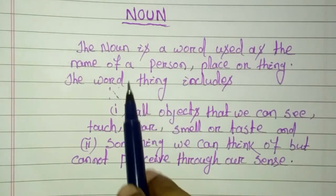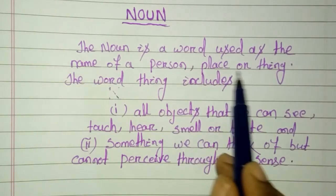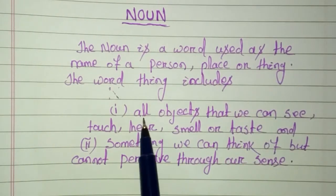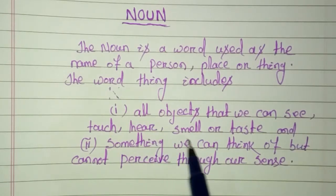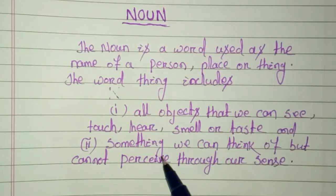So what is about the name of a place or thing. That is all objects that we can see, touch, hear, smell or taste. And something we can think of but can't perceive through our sense.